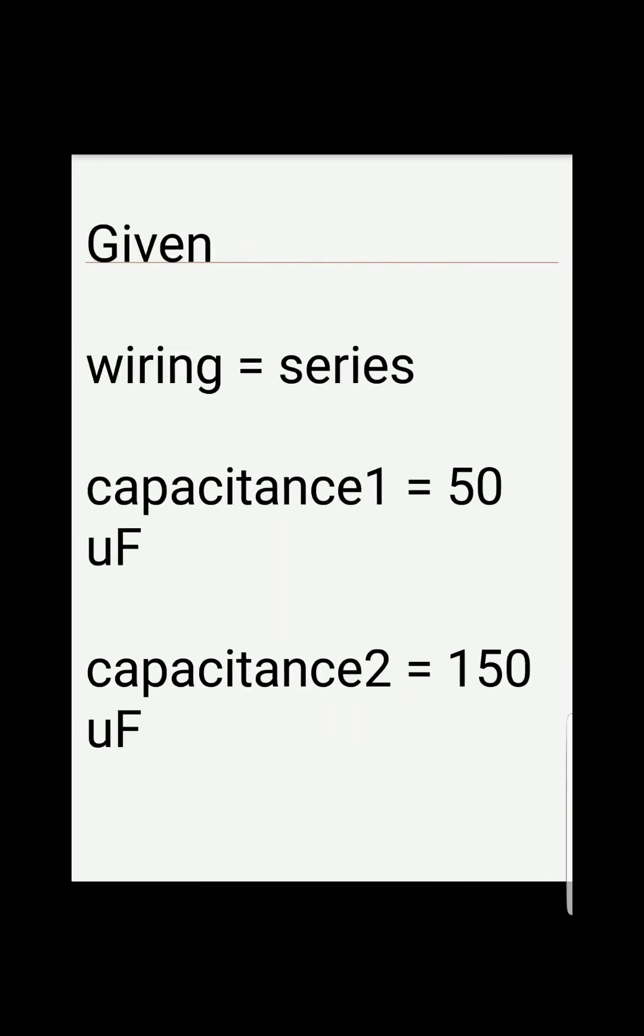So we have our givens here: the wiring is in series, capacitance of the first capacitor is 50 microfarads, and the second one has 150 microfarads. The unknown is the total capacitance of the circuit.